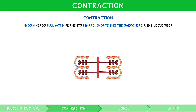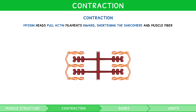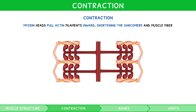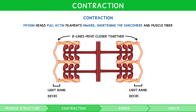Since contraction involves greater overlap of actin and myosin, with resulting shortening of sarcomeres, we can make several observations with regards to the banding patterns. The Z-lines move closer together, and the light bands reduce in size.